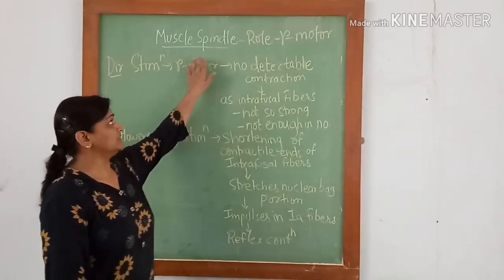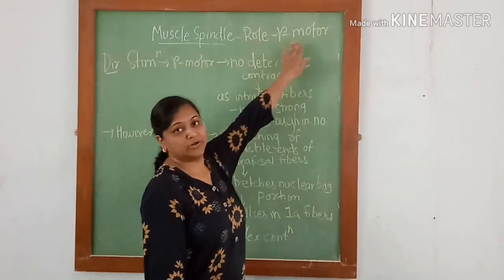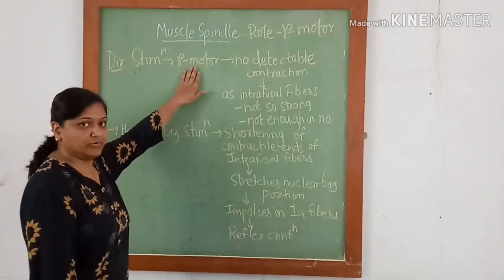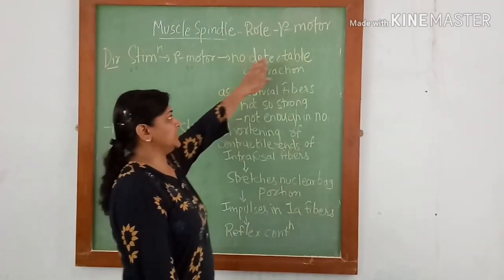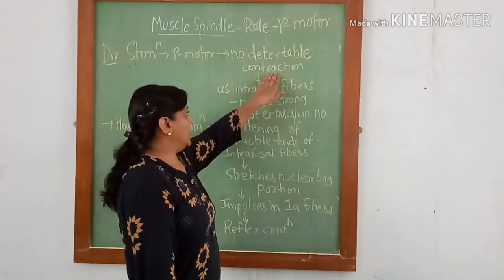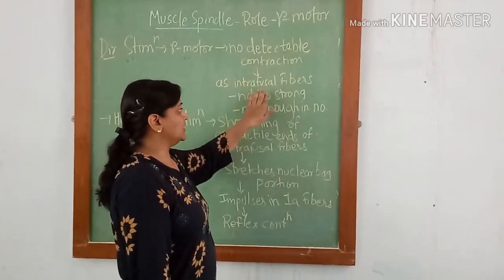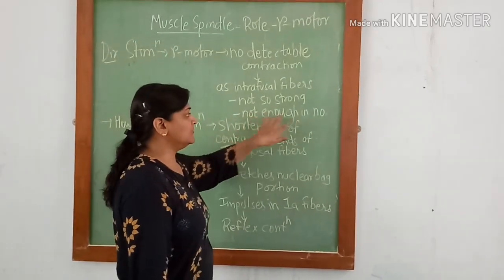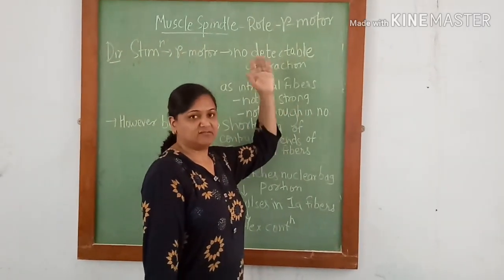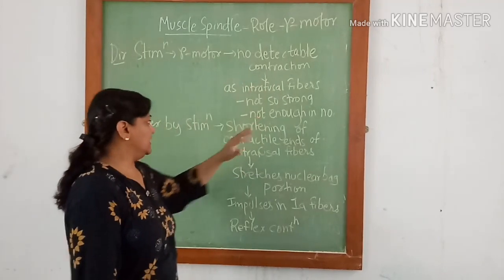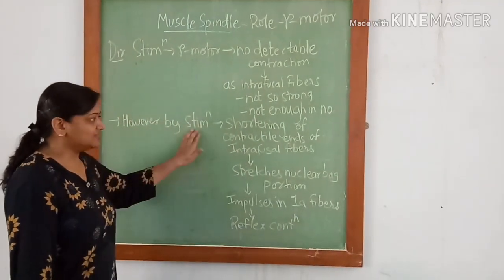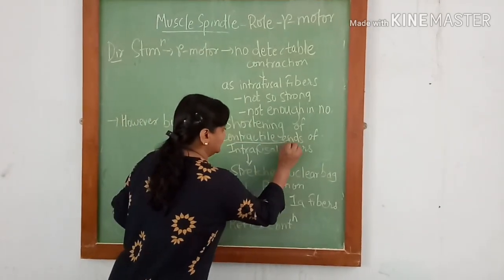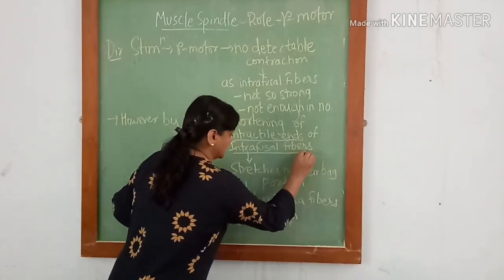Now let us discuss the role of gamma motor neurons. When there is direct stimulation of gamma motor neuron, there is no detectable contraction as the intrafusal fibers are not strong enough or not enough in number like extrafusal fibers. Still whenever there is direct stimulation, there is shortening of the contracted ends of the intrafusal fibers.